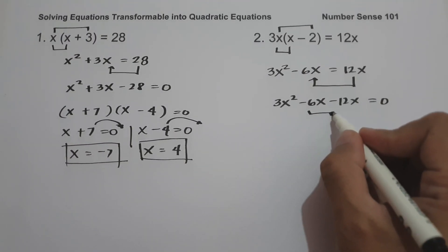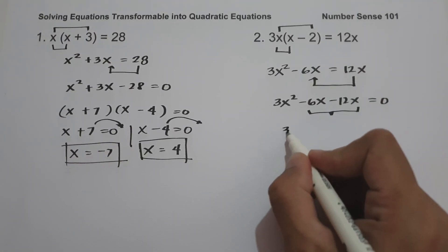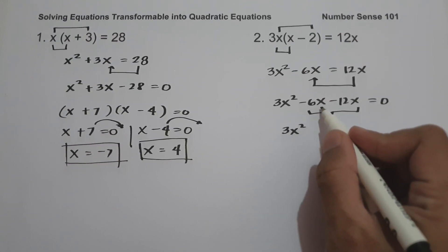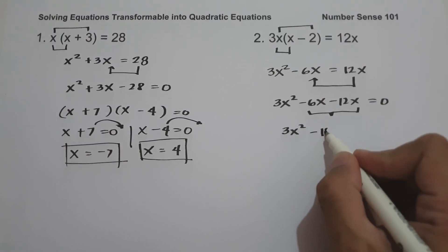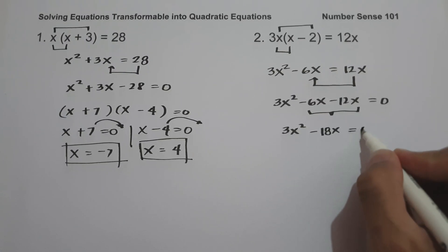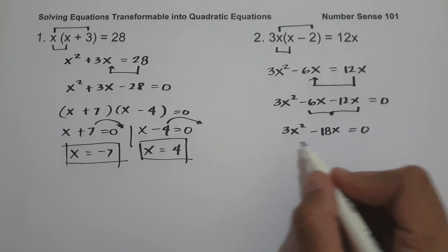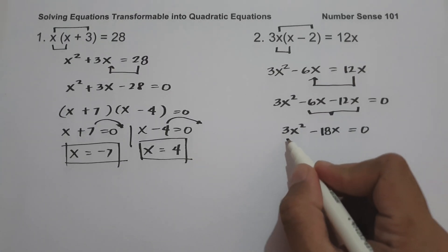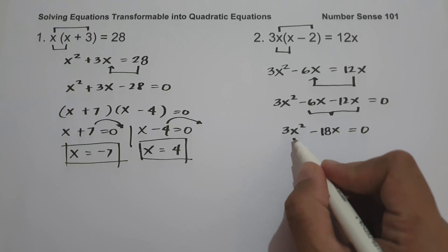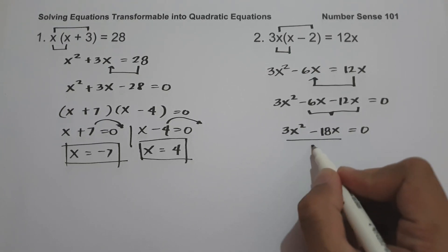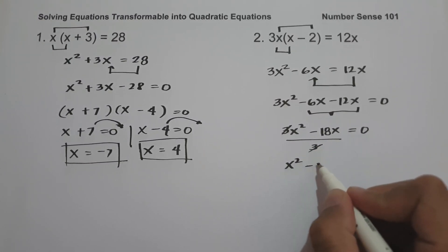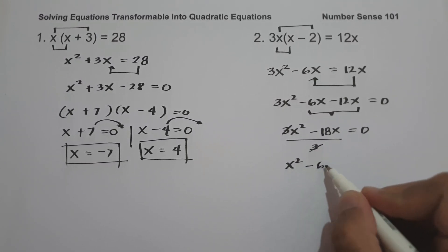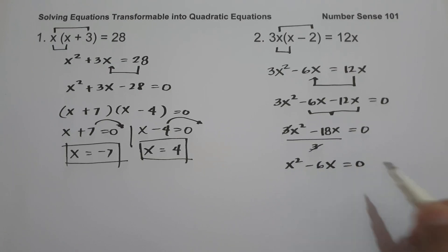Let us simplify. Rewriting: 3x squared, and negative 6x minus 12x is negative 18x, equals 0. We can simplify by dividing each term by 3, since all terms are divisible by 3. This gives us x squared minus 6x equals 0.